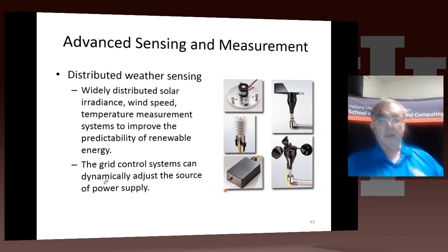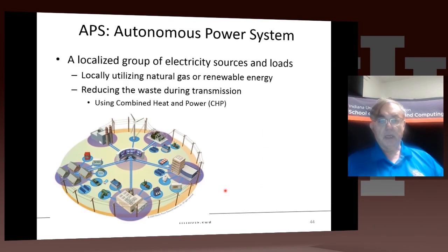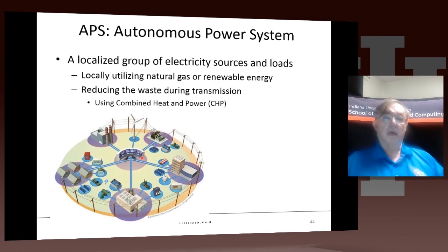A lot of the problems with power come from bad weather. You not only want to predict bad weather, you also want to know when your solar energy and wind energy will be effective. The final vision is to have self-sufficient energy with wind, natural gas, and renewable energy, all integrated together with this type of infrastructure, supporting a richer set of electrical power producers.